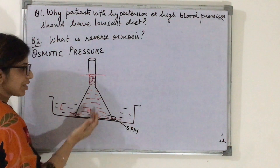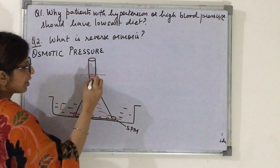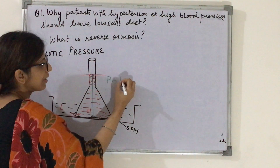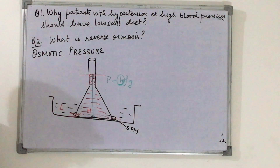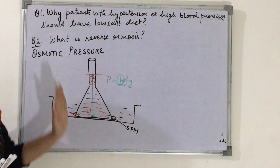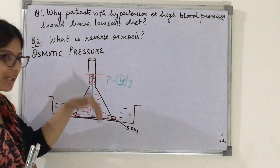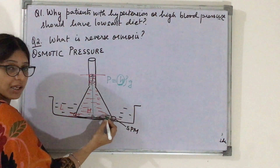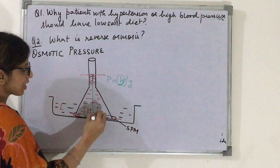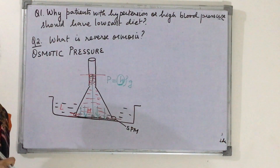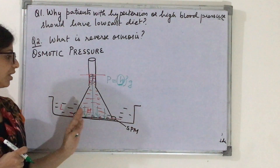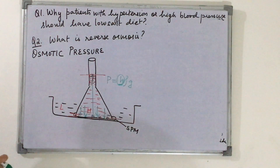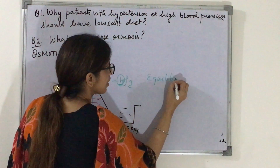Due to osmosis, water was flowing in, but as the water column height increases, it exerts pressure — pressure by a liquid column is H·ρ·g, dependent on depth. So two forces are acting: the osmotic force pushing water in, and the hydrostatic pressure of the water column pushing back. At equilibrium, the hydrostatic pressure equals the osmotic pressure, and movement of water stops.